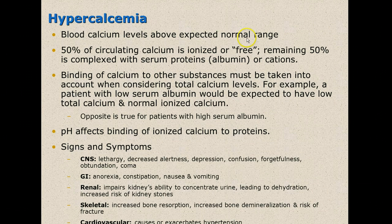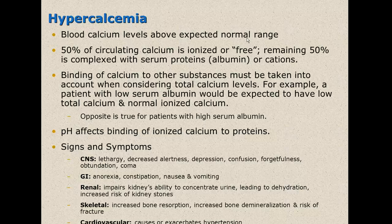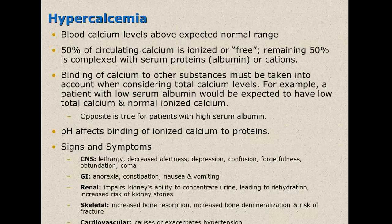One issue we can have is hypercalcemia, where blood calcium levels are above the expected normal range. When we look at calcium in the human body, 50% of circulating calcium is ionized or free, and the remaining 50% is complexed with serum proteins or albumin. Binding of calcium to other substances must be taken into account when considering total calcium levels. A patient with a low serum albumin would be expected to have a low total calcium but a normal ionized calcium, which is why ionized calcium is usually a better indication of somebody's calcium status.